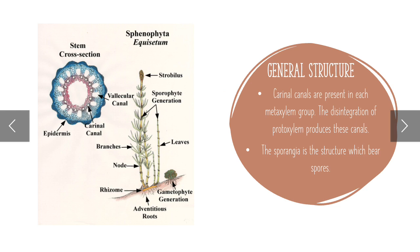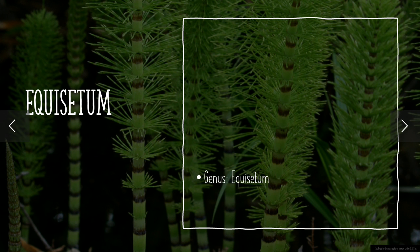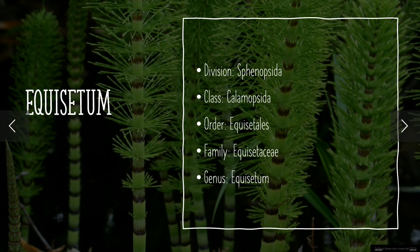You can see in the diagram: sporangia is the structure which bears spores and is present on the top of the fertile branches. Classification: Equisetum devonianum — class Phenopsida, order, family, and genus as Equisetum.